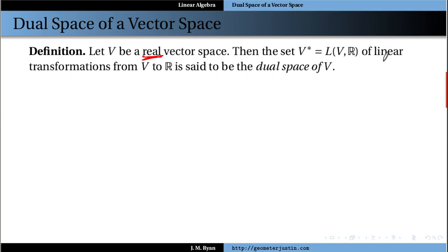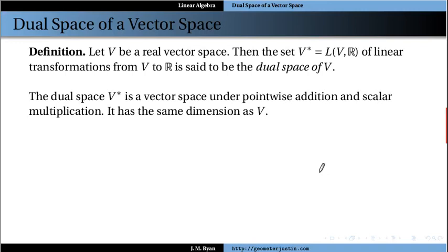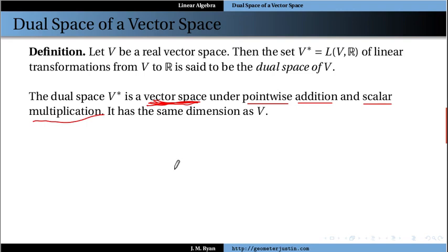And these are functions, and they're linear transformations from one vector space to another. So this set is called the dual space of V. The dual space V star of V — we always call it V star — is itself a vector space, but we need to define the operations to know what kind of vector space or how the vectors behave. And since the vectors in V star are going to be functions, then the operations are going to be the point-wise addition and scalar multiplication from our function spaces.